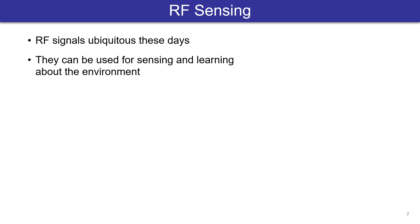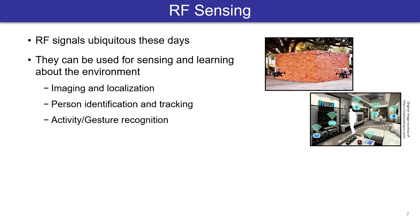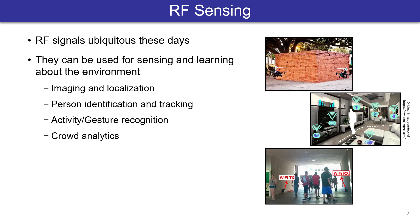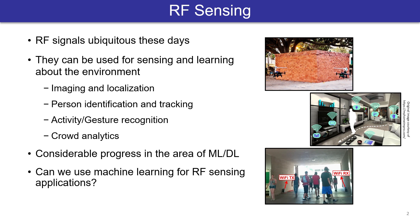Wireless signals are everywhere these days and researchers have utilized them for various applications like imaging, person identification and tracking, and crowd analytics. In recent years, we have also seen great advancements in machine learning and deep learning. So one natural question is: can we use machine learning for RF sensing applications?